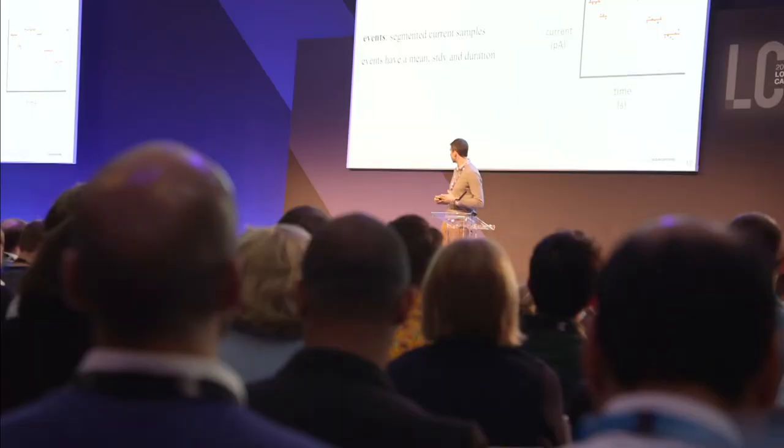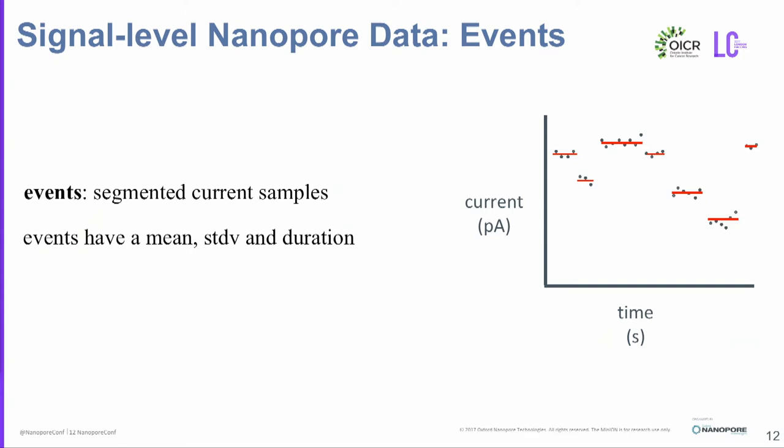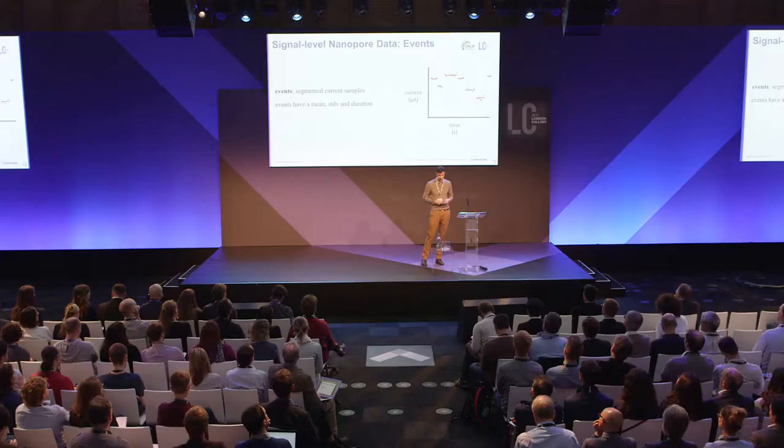A segmentation algorithm, like the one that runs in the Albacore base caller, takes these current samples and tries to look for change points where the current has substantially changed. We work with events because they are typically much smaller — you have many fewer events after segmentation. Our algorithms run faster, and there's not a lot of information lost going from raw current samples down to events. Each event has a tuple of data: the mean current level, the standard deviation, and the duration.